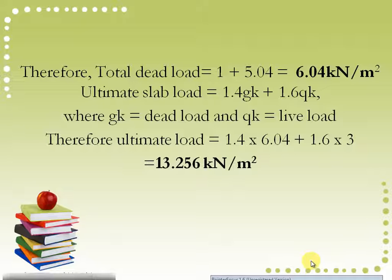The formula for ultimate slab load is 1.4gk plus 1.6qk where gk is dead load and qk is live load. Therefore, our ultimate load is 1.4 times 6.04 plus 1.6 times 3 which gives us 13.256 kN/m². Remember the 3 is the live load.